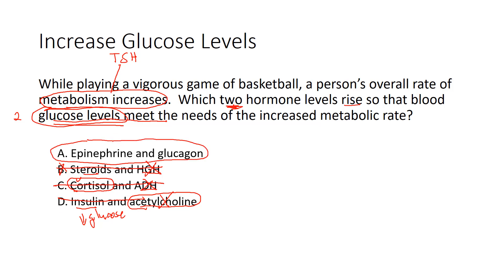The correct answer is A. Epinephrine is released by the adrenal medulla in response to a nerve stimulus from the hypothalamus, and it increases the conversion of glycogen into glucose — so it does raise glucose levels. The second hormone is glucagon, which takes excess glycogen and converts it into glucose when blood sugar is too low. So both epinephrine and glucagon increase glucose levels. And using process of elimination, we got rid of the other answers and arrived at answer A.